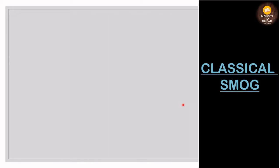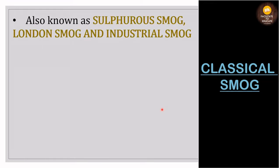Classical smog is also known as sulfurous smog, London smog, and industrial smog. It originated during the early industrialization period when coal was the main source of energy. Burning coal releases sulfur, hence it is called sulfurous smog. It was identified mainly in London, which is why it is also known as London smog. It is brown in color — unlike normal fog which is whitish — and it is reducing in nature.